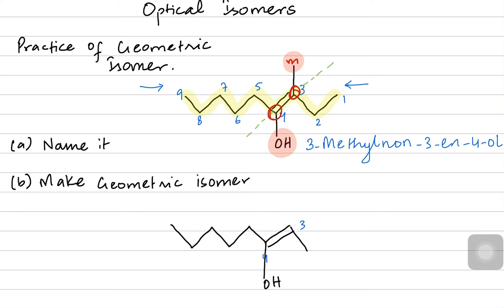Now for carbon 3, I am flipping the methyl group and the two-carbon chain — that's carbons one and two. So instead of at the bottom, I am making it from the top. So now methyl is coming from the bottom while carbons one and two are coming from the top.